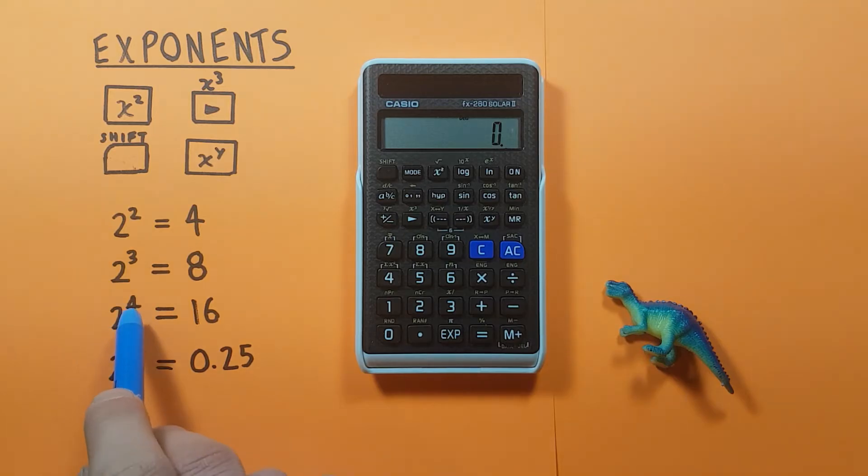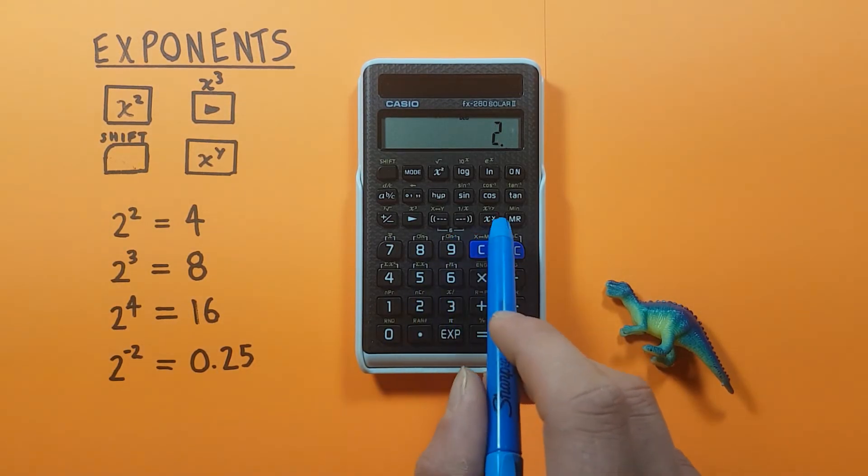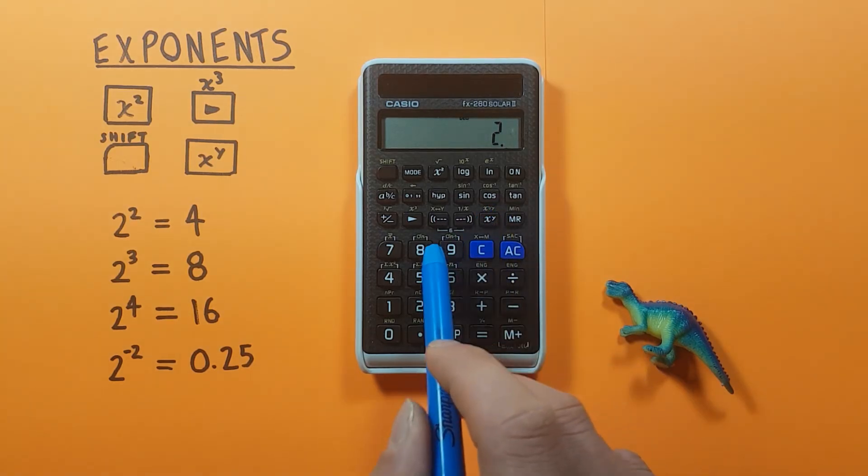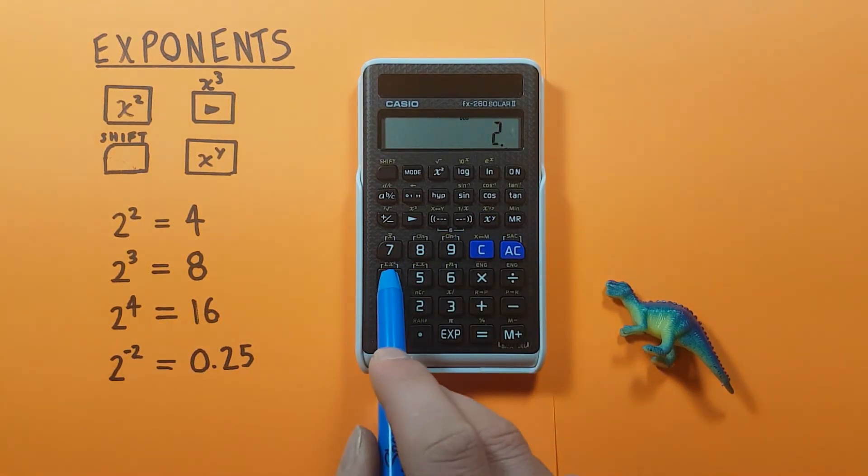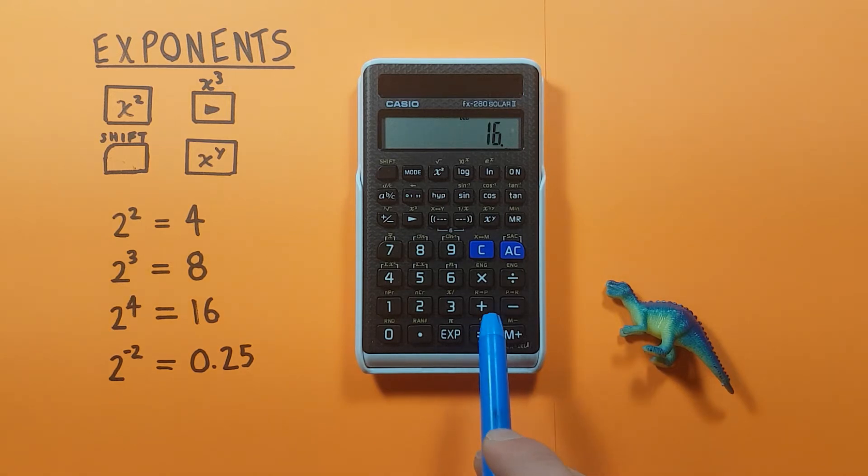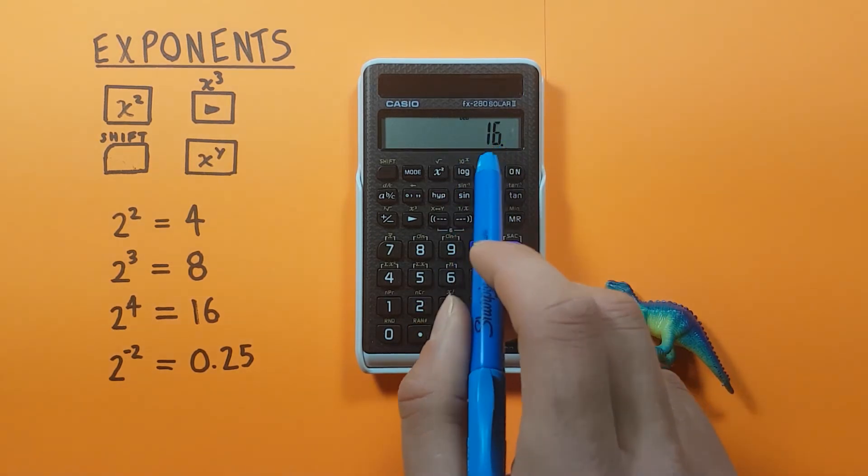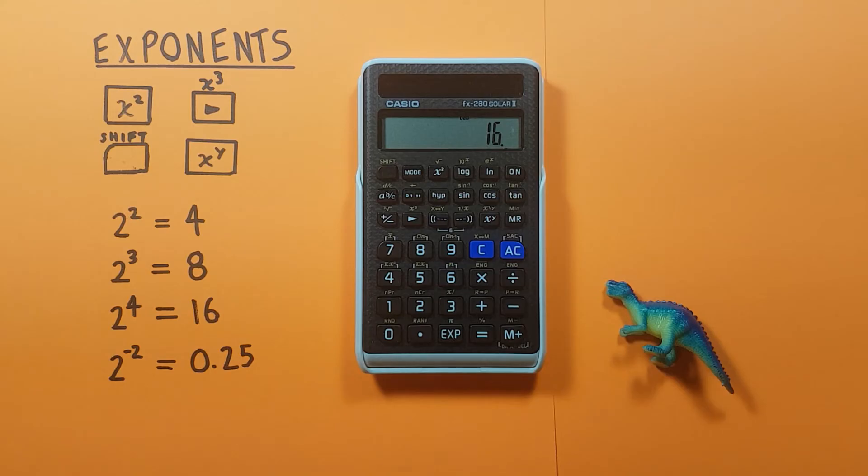So if we wanted to find 2 to the power of 4, we would place 2 on the screen and press the x to the y key and then the exponent, which for us is 4, and then press equals, and this gives us the result. 2 to the power of 4 is 16.